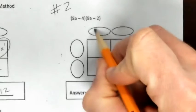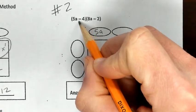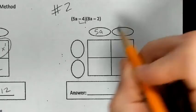So let's take 5a, the first term, and place it there. I'm going to take the negative four, the operation and the term, and place it here.